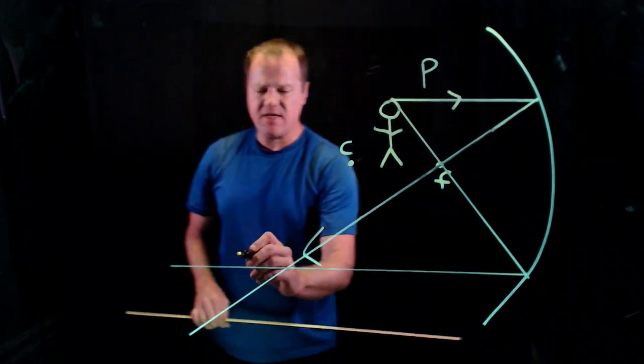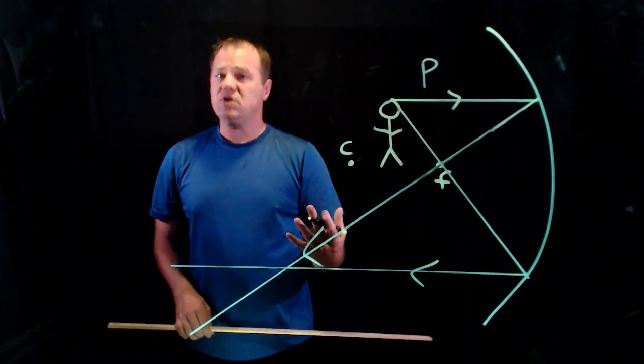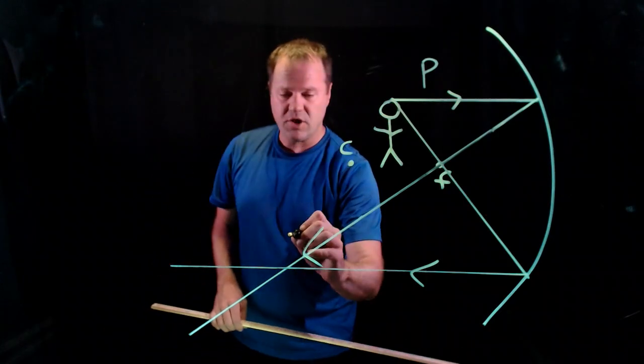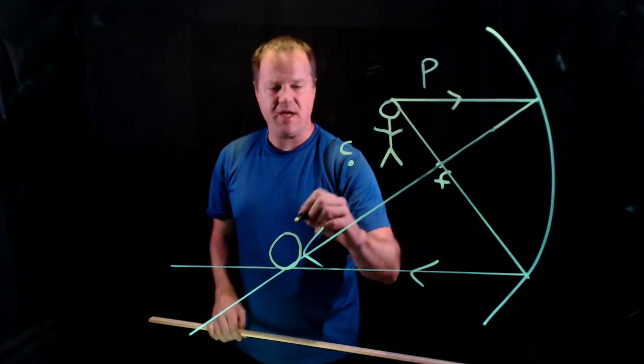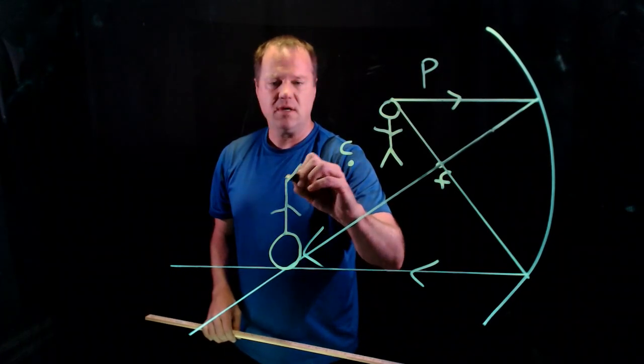So where those rays converge is the location of the image, at least the top of the person's head. So we'll draw the person's head, and then we can extrapolate to the rest of the person's body.